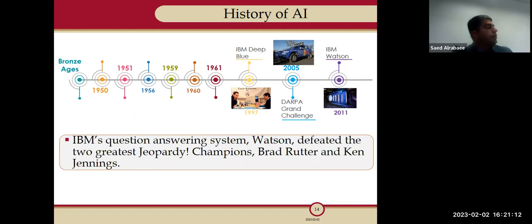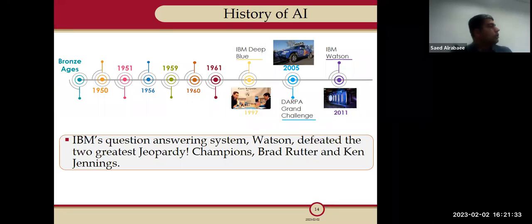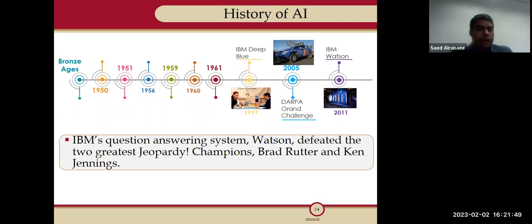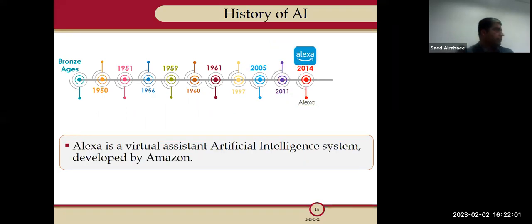In 2011, IBM created Watson, a kind of chatbot and answering machine. You could ask it questions and it would answer. Watson was able to beat big names like Brad Rutter and Ken Jennings on Jeopardy. You can see the evolution of AI — how fast it was developing, always trying to match and then exceed human capabilities, because the goal of AI is to make machines think and behave like a human.